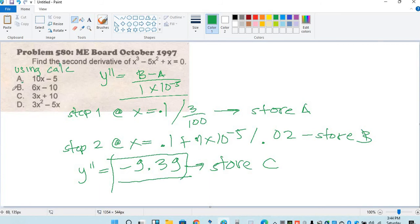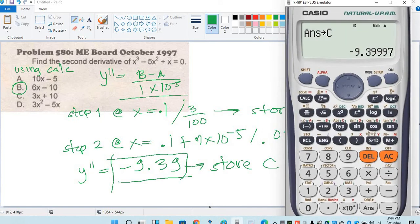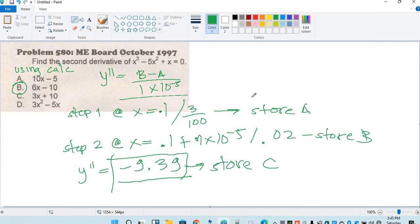The answer here, in order to save time, let's try letter B: 6x minus 10. Then calc, x is 0.1, equals negative 9.4. This is negative 9.4 at x equals 0.1. So the answer is letter B.